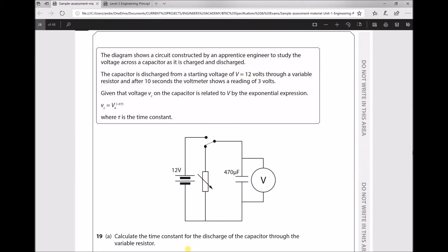Question 19 states: The diagram shows a circuit constructed by an apprentice engineer to study the voltage across a capacitor as it's charged and discharged. The capacitor is discharged from a starting voltage of 12 volts through a variable resistor, and after 10 seconds the voltmeter shows a reading of 3 volts. Given that the voltage VC on the capacitor is related to V by the exponential expression VC equals V*e^(-T/τ), where τ is the time constant.